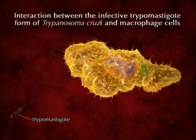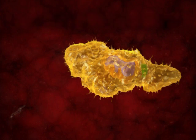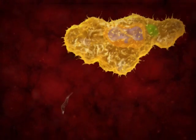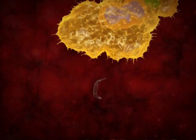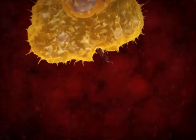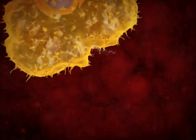Interaction between the infective trypomastigote form of Trypanosoma cruzi and macrophage cells. In this example, the attachment of the trypomastigote form to the macrophage surface is observed.